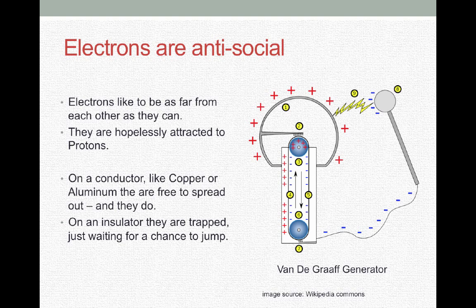We like to talk about electrons as being antisocial. They do not like to be close together. They want to be as far from one another as they possibly can. So given the possibility, they will spread out and give themselves equal distance in a material. But they are attracted to protons, so negative charge is attracted to a positive charge. On a conductor, things like copper or aluminum, the electrons are free to spread out and they will, as much as possible. On an insulator, electrons get trapped and they're just waiting for a chance to make a jump. So an example of this kind of a jump is a Van de Graaff generator.